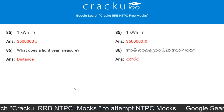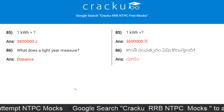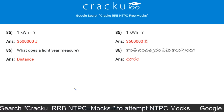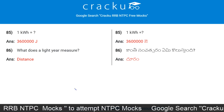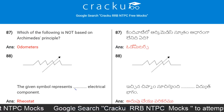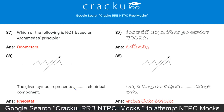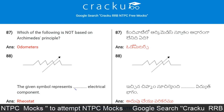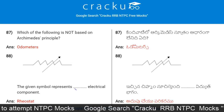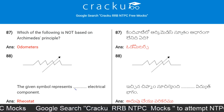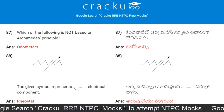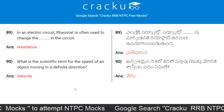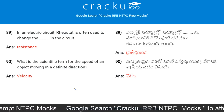One kilowatt-hour is equal to 36 lakh joules. A light year measures distance. Which of the following is not based on Archimedes' principle? Odometers. The given symbol represents a rheostat electrical component. In an electric circuit, a rheostat is often used to change the resistance in the circuit.